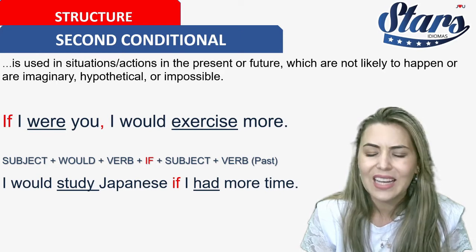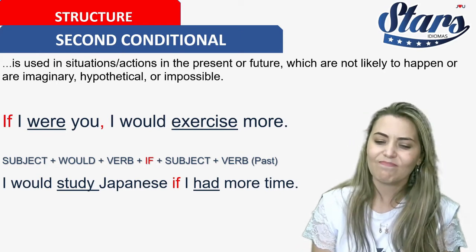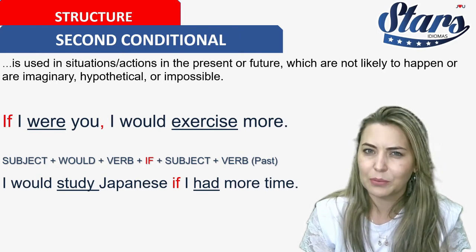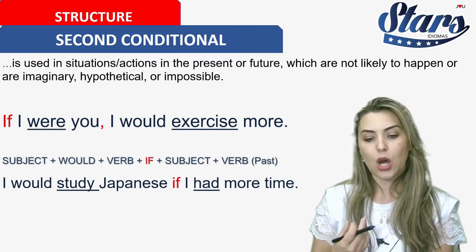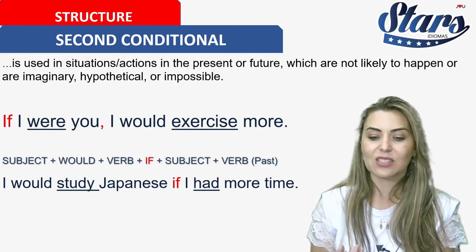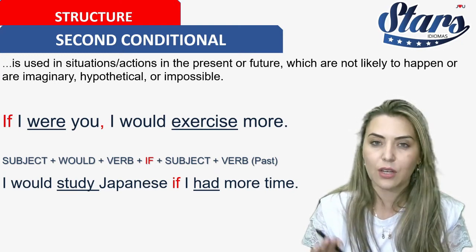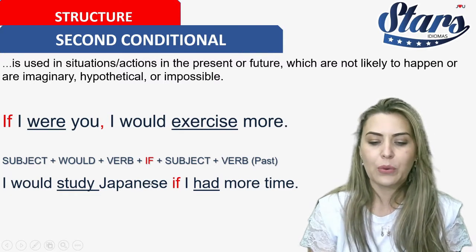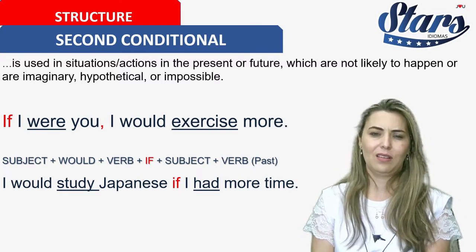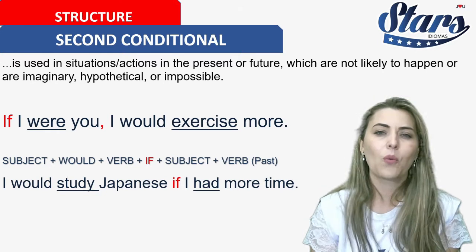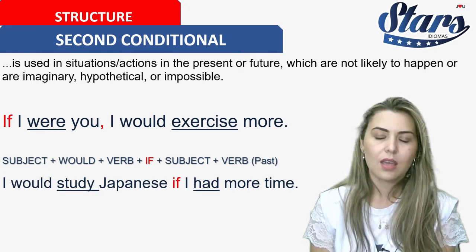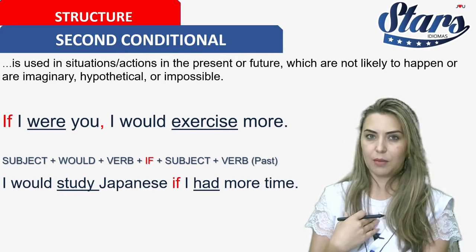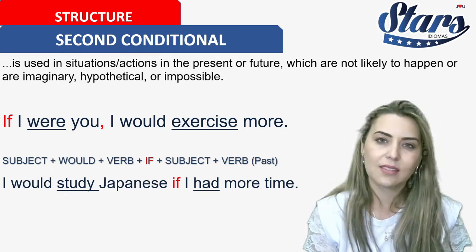Do you know impossible? It's something quite impossible. The second conditional is when you talk about something that is quite impossible. If I were you, I would exercise more — what is the chance I could become you? It's impossible. It's impossible for me to become you. That's impossible.